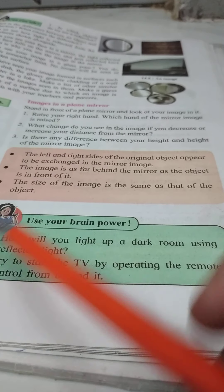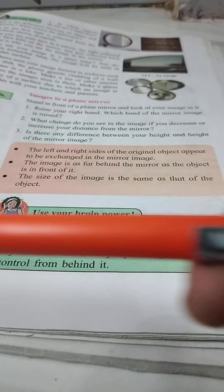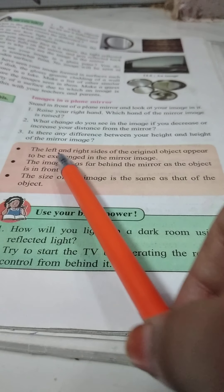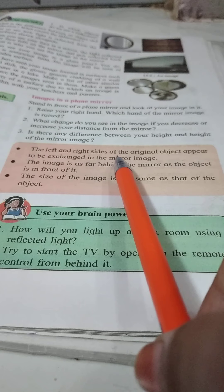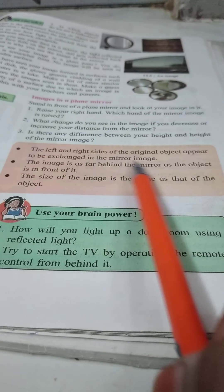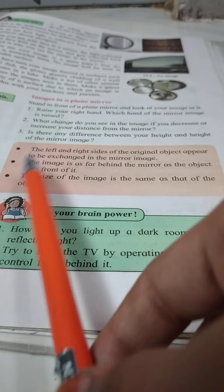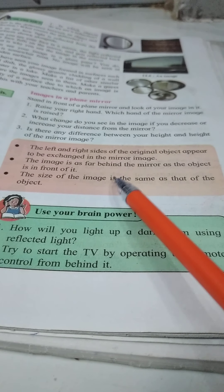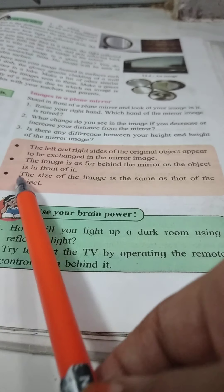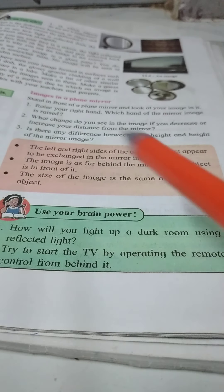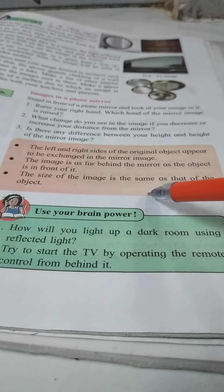The left and right sides of the original object appear to be exchanged in the mirror image. The image is as far behind the mirror as the object is in front of it. The size of the image is the same as that of the object.